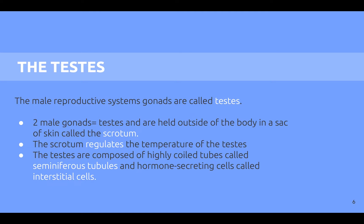Now we're going to look at the actual structure of the male reproductive system and their functions. First, the gonads are called testes. They are held outside of the body in a sack of skin called the scrotum. The scrotum regulates the temperature of the testes. They are composed of highly coiled tubes called seminiferous tubules and hormone-secreting cells called interstitial cells.